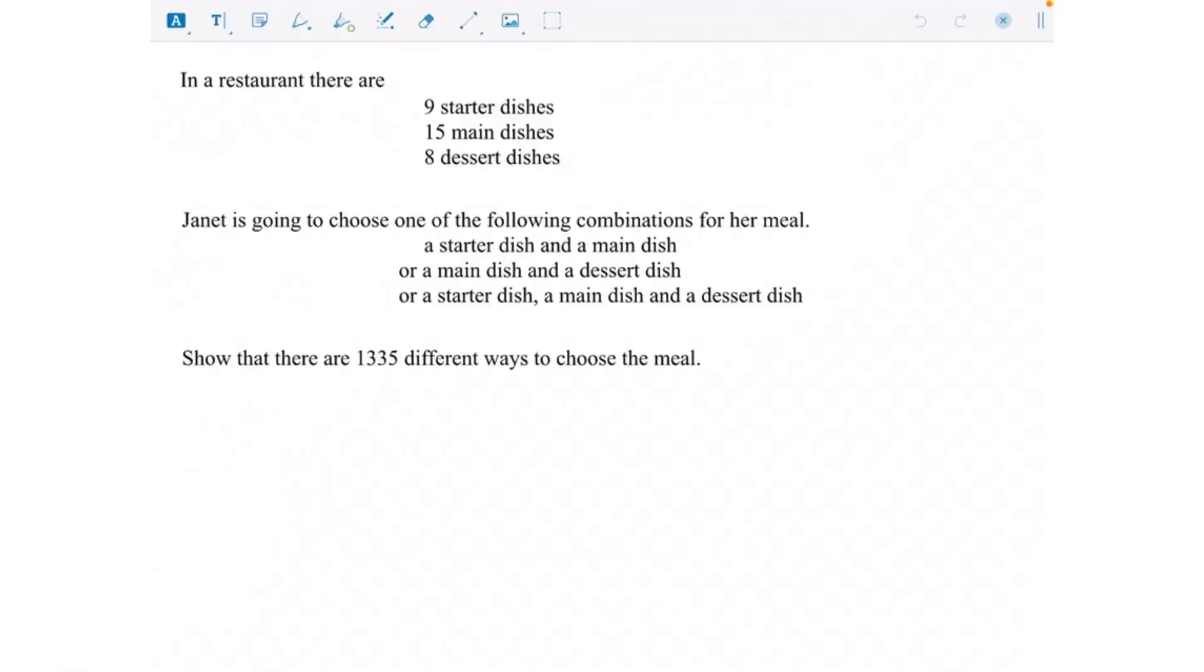So the product rule for combinations sounds really complicated, but it's actually not so bad. If we ignore this question just for a second, let me just do an example. Let's say, for example, that I've got two t-shirts and I'll draw some terrible t-shirts for you there we go.